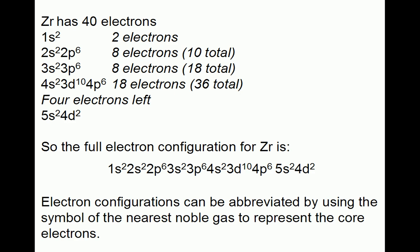Zirconium has 40 electrons. Following the mnemonic, the first 2 electrons go into the 1s subshell. 2 electrons go into the 2s subshell and 6 into the 2p subshell, for a total of 8 in the second shell. Adding the 2 from the first shell gives 10 total. 2 electrons go into the 3s subshell and 6 into the 3p subshell. Adding these 8 to the previous 10 gives a total of 18. The next 2 electrons go into the 4s subshell, the following 10 go into the 3d subshell.